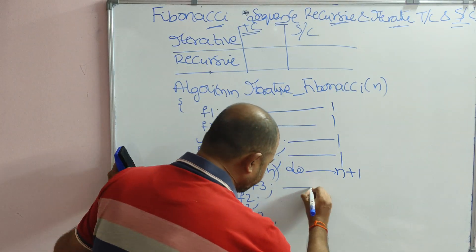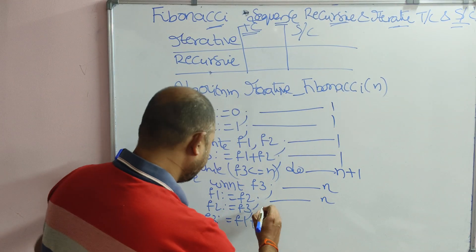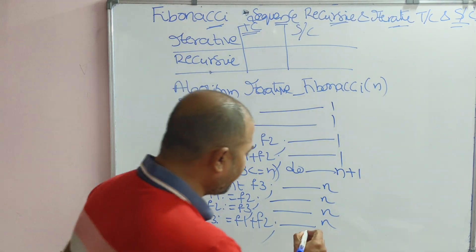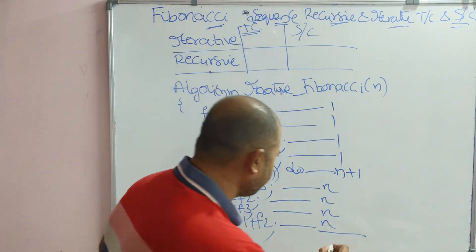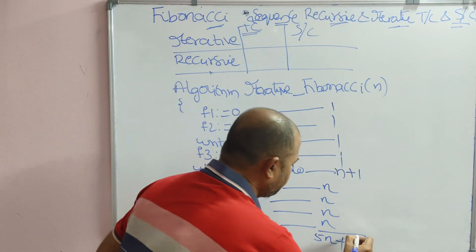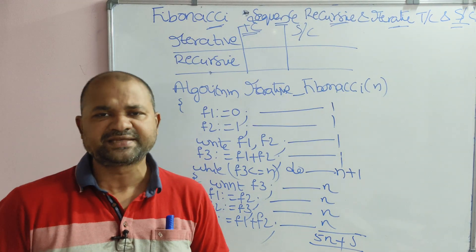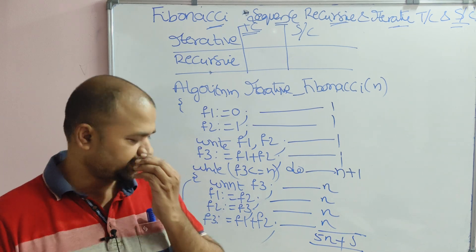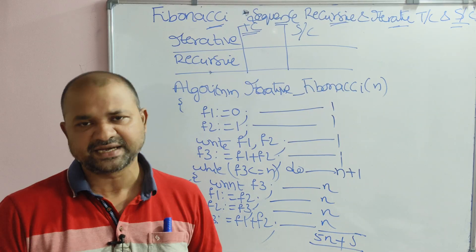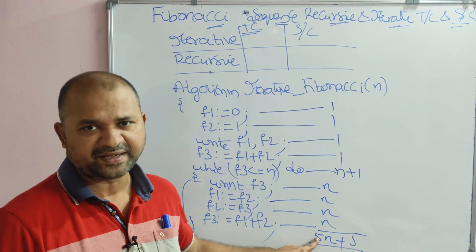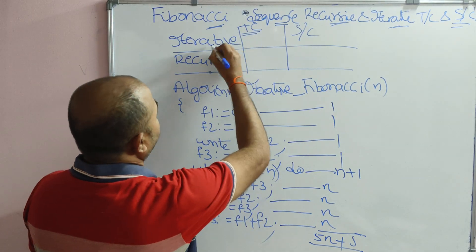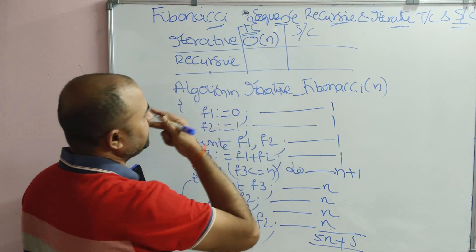The body of the while loop will be executed n times — three assignment statements inside the loop each count n. Adding all values: 4n plus 1, giving us 5n plus 5. While calculating time complexity, we consider only the higher-order exponent. n is n power 1, and the constant 5 is n power 0, so we ignore constants. The time complexity for the iterative approach is O(n).